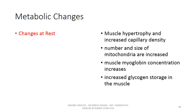In terms of metabolic changes at rest, the findings in a trained individual include hypertrophic muscles and increased capillary density in the trained muscles, meaning the muscles are able to receive more blood and more oxygen. The number and size of mitochondria are greater in trained muscles, so they are able to metabolize at a higher rate and produce ATP at a higher rate. Myoglobin concentration in the muscle is also much higher in the trained person, enabling more oxygen extraction.